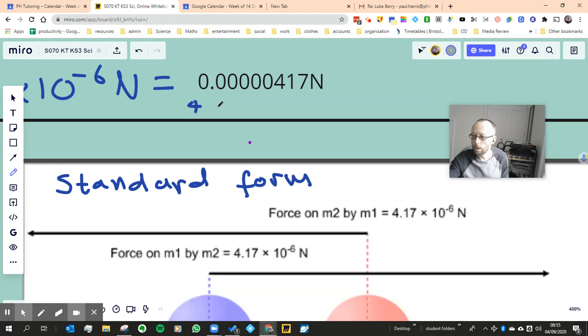as well. So 4, and then you go 1, 2, and then any of those after that you use zeros, and then you'd go 3, 4, 5, 6. So that would be 4.17 times 10 to the 6 Newtons. Okay, so that makes sense.